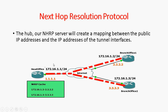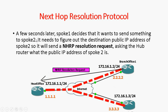The head office as NHRP server holds this mapping table showing private IP and public IP entries. A few seconds later, spoke 1 — branch office 1 — decides it wants to send something to spoke 2, which is branch office 2. It needs to figure out the destination public IP address of spoke 2, which is 3.3.3.x. Branch office 1 sends an NHRP resolution request asking the hub router for the public IP address of spoke 2, in order to form a direct tunnel between branch office 1 and branch office 2.